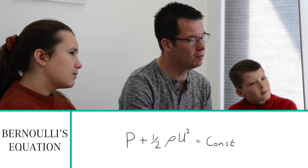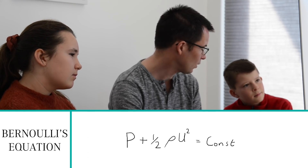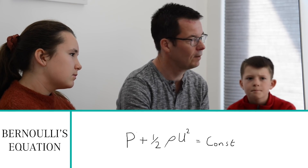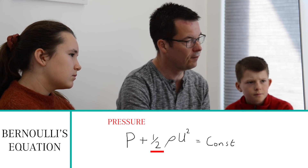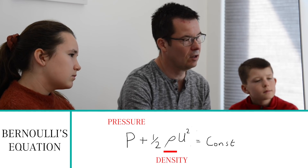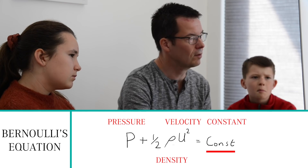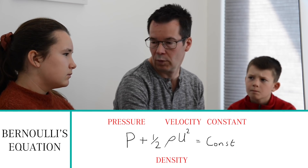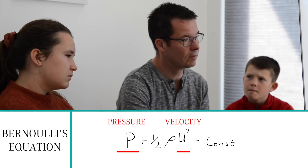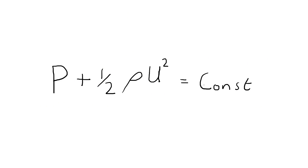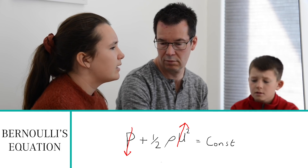This is called Bernoulli's equation, and this is an equation that aerodynamicists use a lot. Although it looks quite complicated, it's actually not as complicated as it looks. We have P for pressure, plus a half times rho — which is the density — times u squared, which is the velocity squared, equals a constant. In air, the density is pretty much constant, so the only terms we're really interested in are pressure and velocity. So if velocity goes up, what happens to pressure? It goes down. Good. And if velocity goes down, pressure goes up. Brilliant.